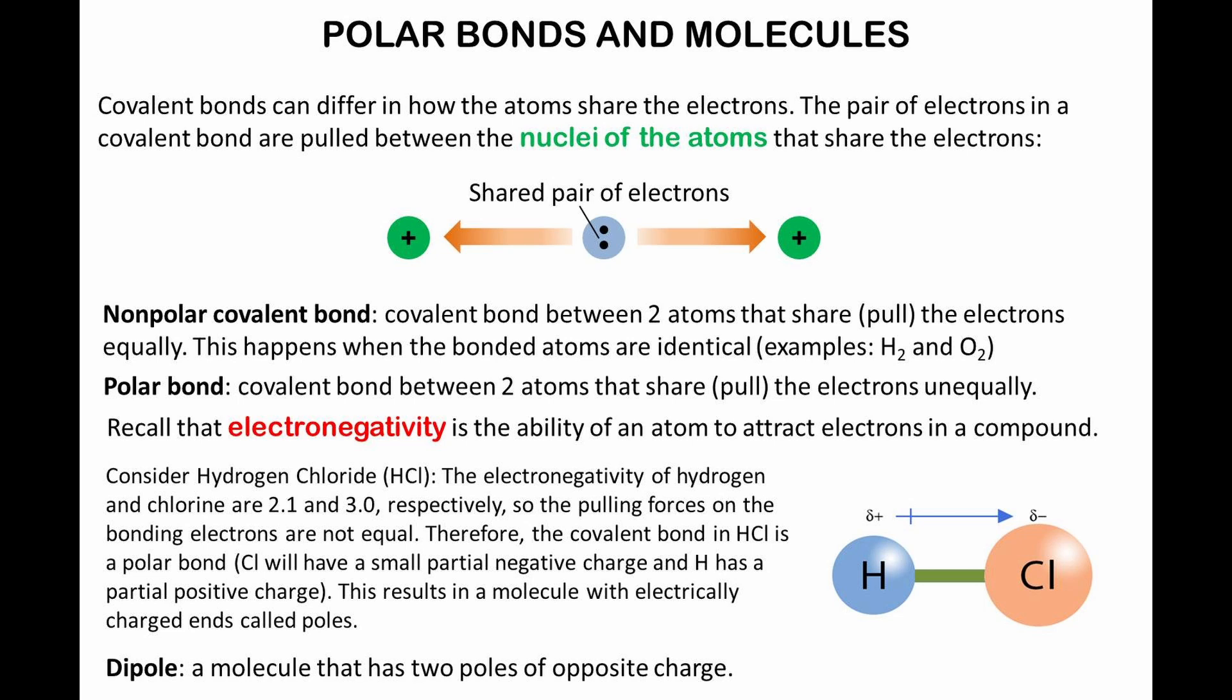The pair of electrons in a covalent bond are pulled between the nuclei of the atoms that share the electrons. A covalent bond between two atoms that share, or pull, the electrons equally is called a nonpolar bond. This happens when the bonded atoms are identical, like hydrogen gas and oxygen gas.